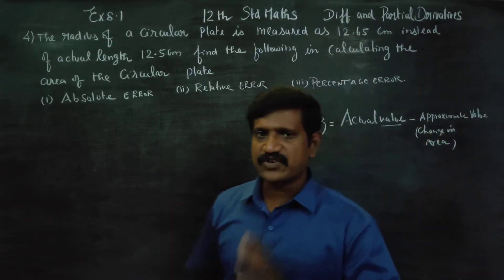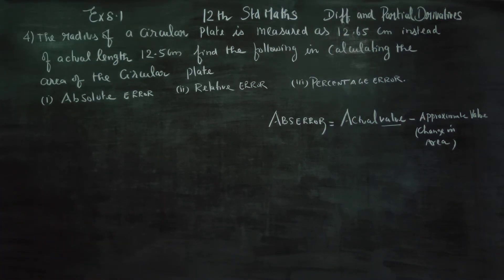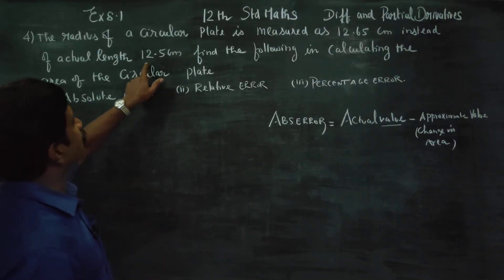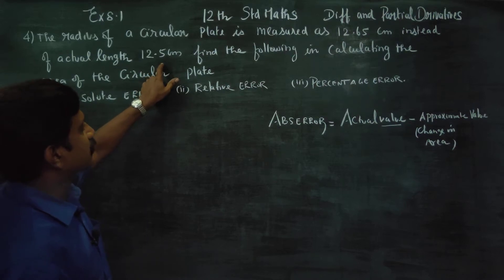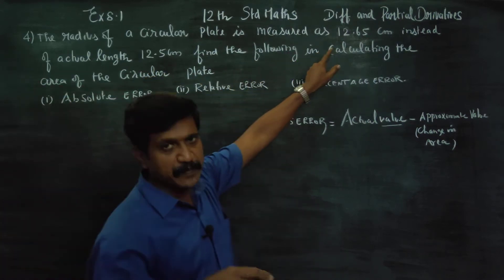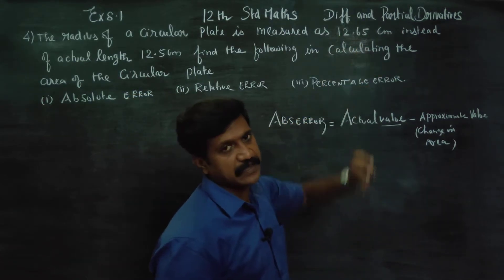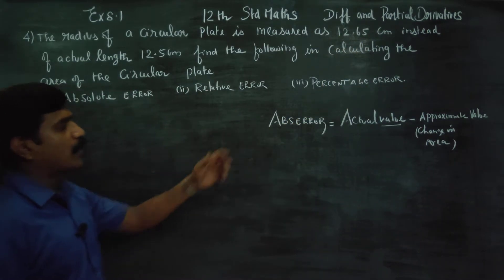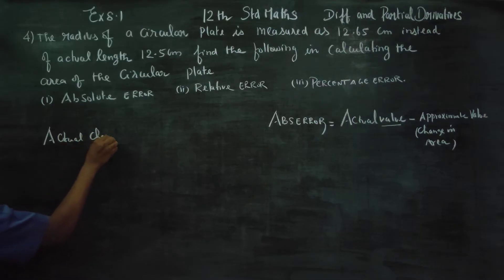What is the actual value? What is the approximate value? First of all, the original radius is 12.5. We need to calculate the actual change in the area.